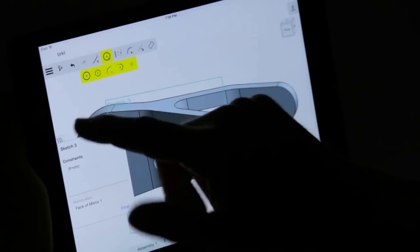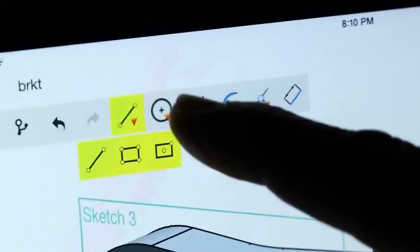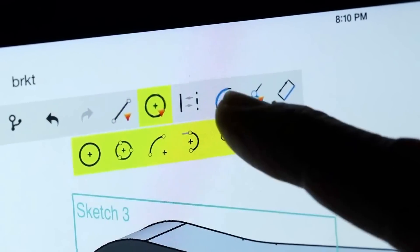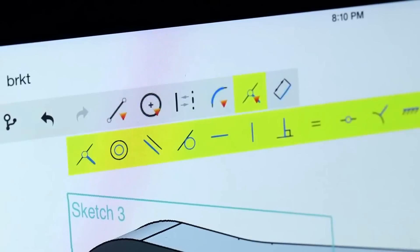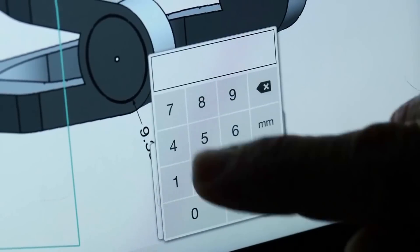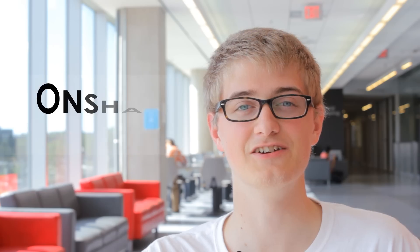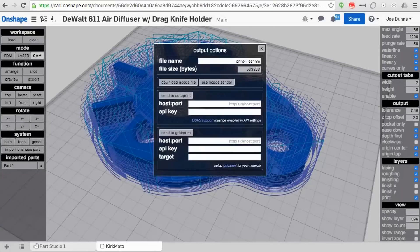We've partnered with Onshape and Kirimoto, one of the world's leading CAD and manufacturing software design companies, to bring you a fun and easy program that will allow you to create your models faster than ever before. Onshape and Kirimoto are free and already available to use on your computer, phone, or tablet.